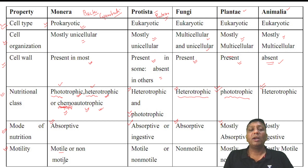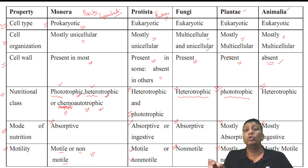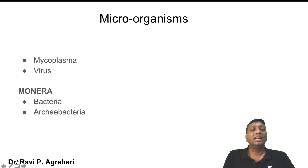Regarding motility and movement: Monerans can be motile or non-motile — both conditions exist, as in bacteria and cyanobacteria. Protista are also motile and non-motile. Fungi are always fixed — non-motile, taking nutrition from other organisms due to their heterotrophic nature. Plantae are mostly non-motile, fixed wherever they are. Animals are mostly motile, moving from place to place. Locomotion is a main characteristic of Animalia.